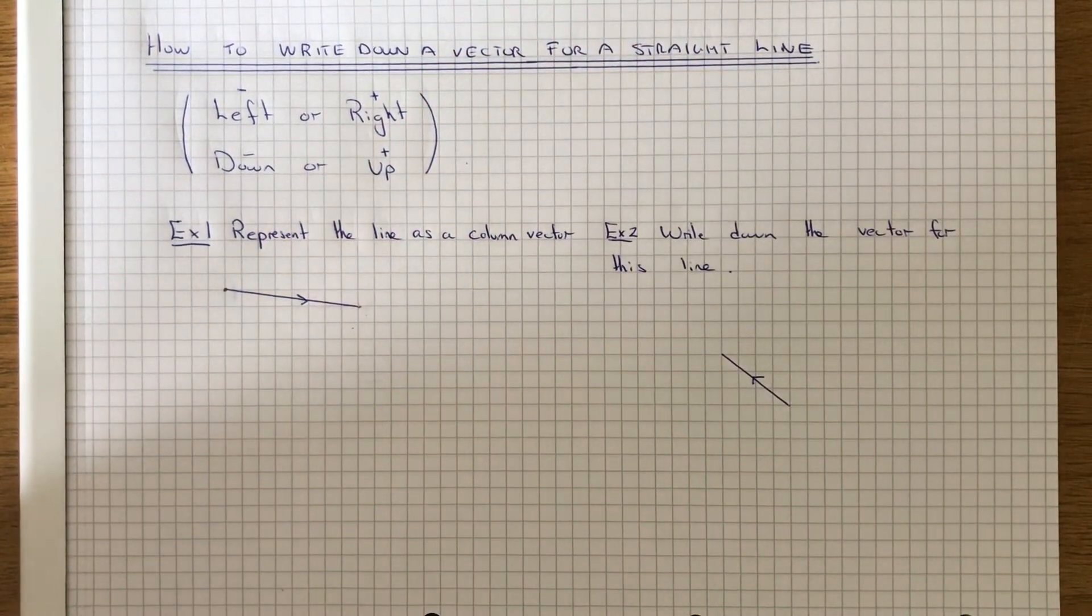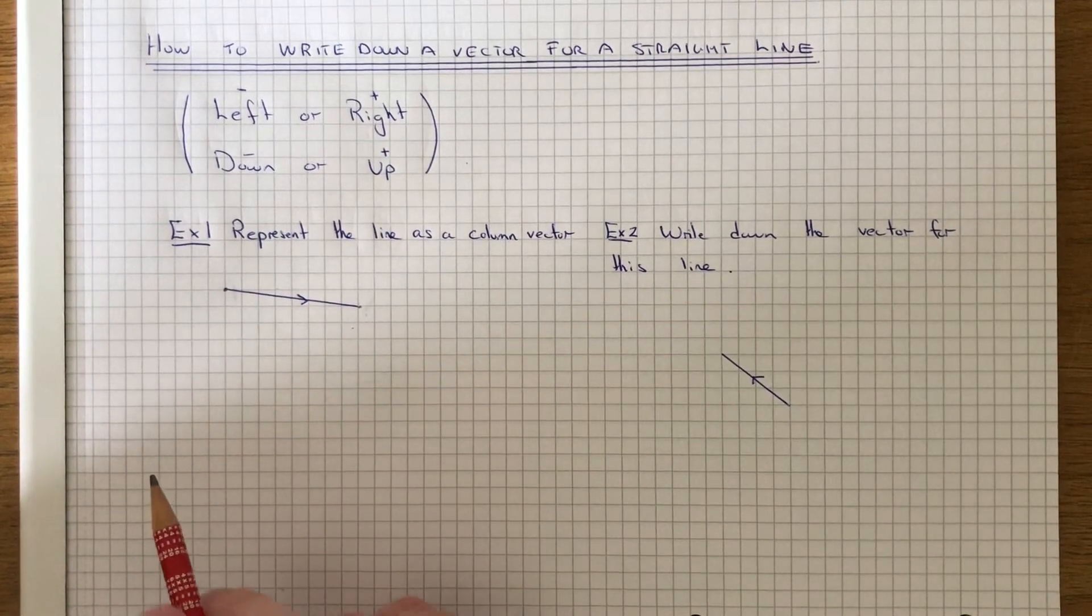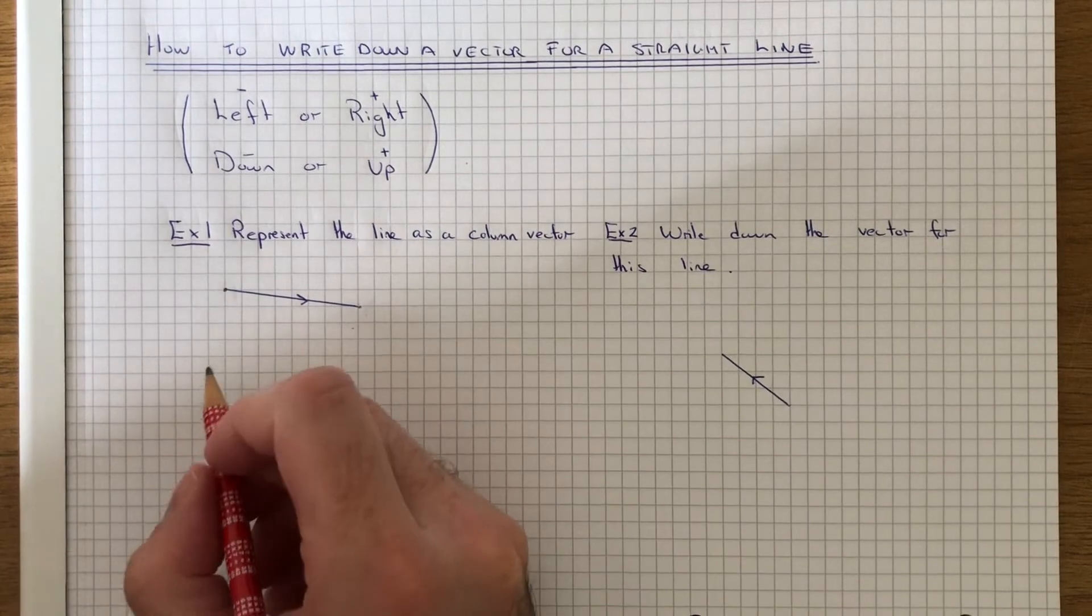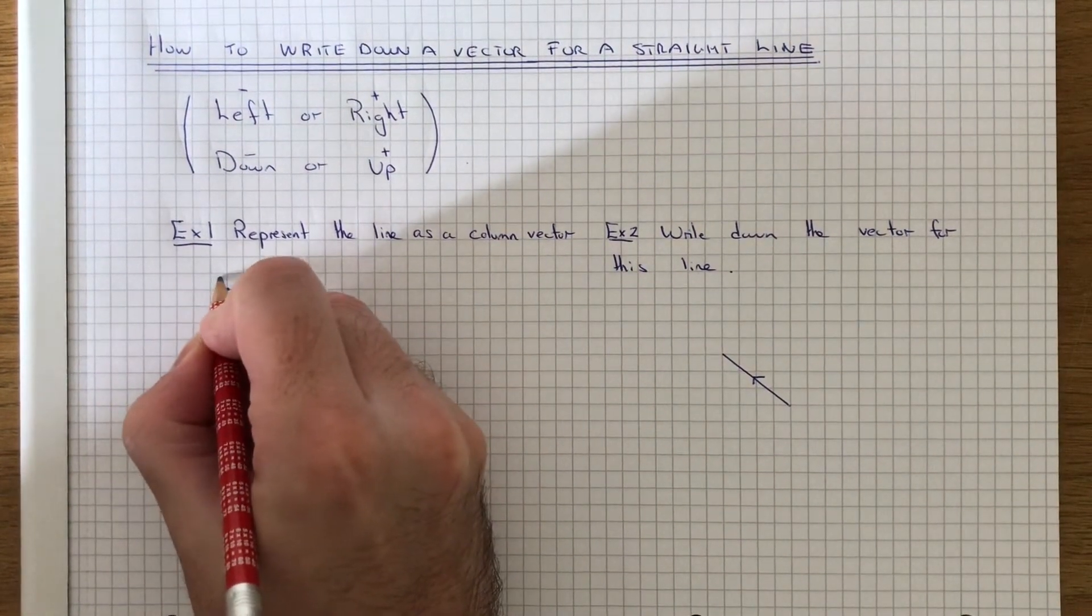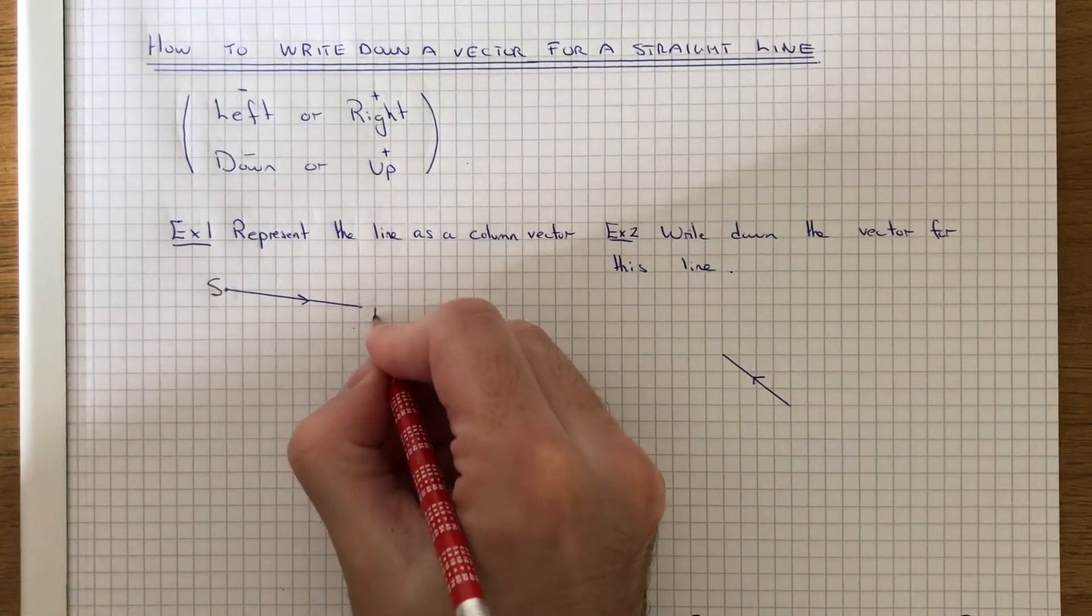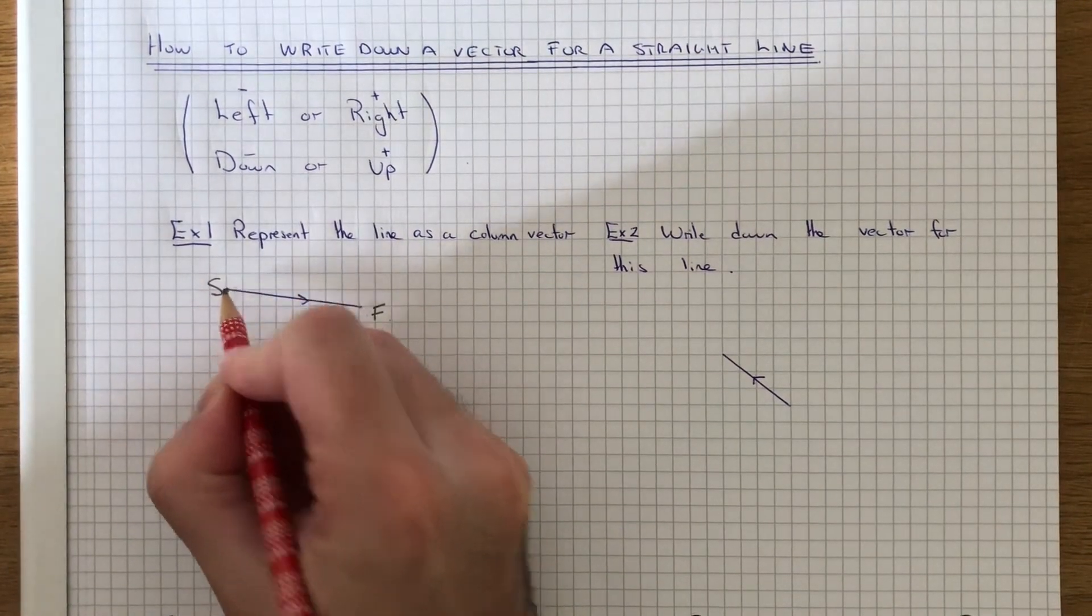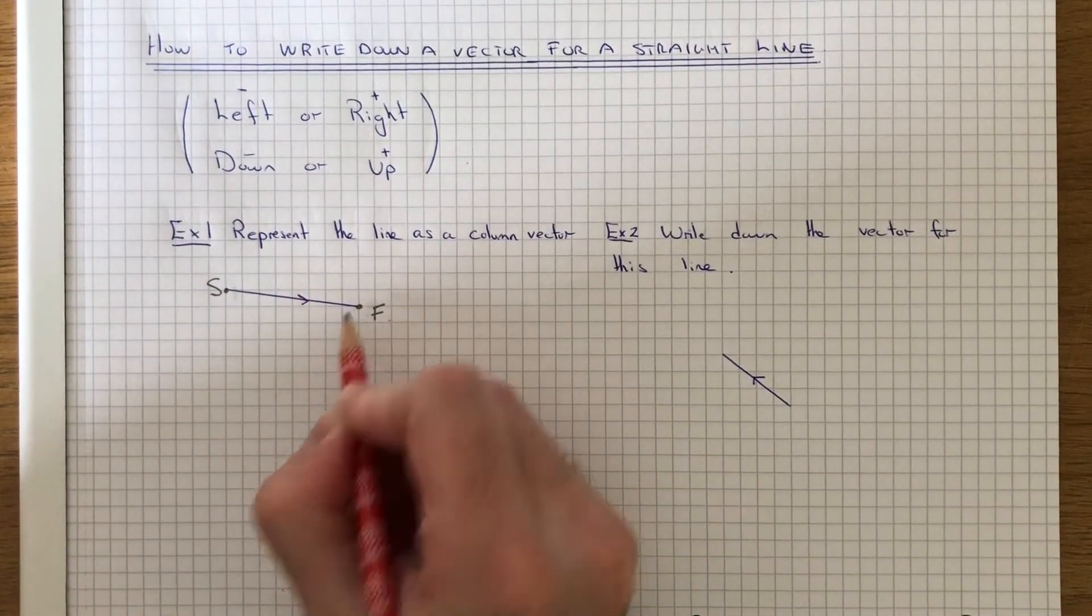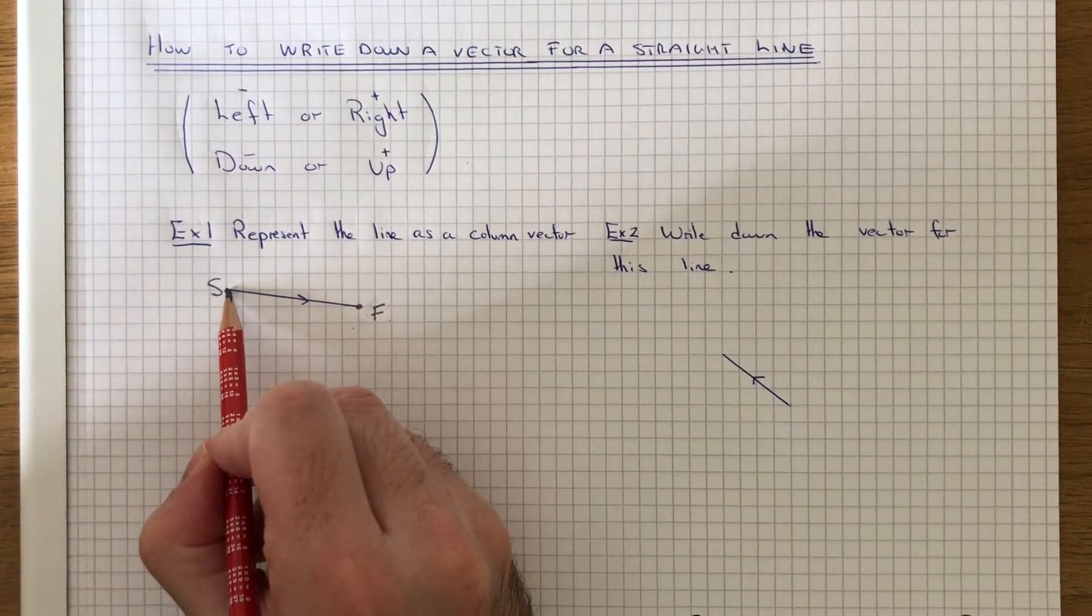So let's have a look at example one. So we've got to represent this line as a column vector. First of all, look at where the line starts and where it finishes. So we're starting at the top here and we're going to finish here. So how do we get from this point, the start, to the finishing point? So first of all, we're going to count the amount of squares going across.